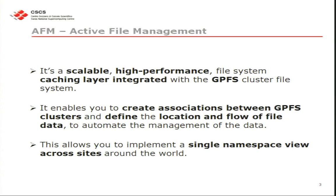IBM says you can create an association between GPFS clusters defining a location and flow about file data. This is true but not complete, because you can create relations between file systems that are not only GPFS — AFM is based on the NFS protocol. So basically the source could be any NFS file system you want; it's not strictly tied to GPFS. The cache layer should be GPFS because you need the AFM part to create the link between the two file systems.